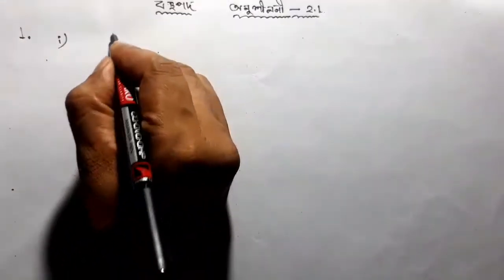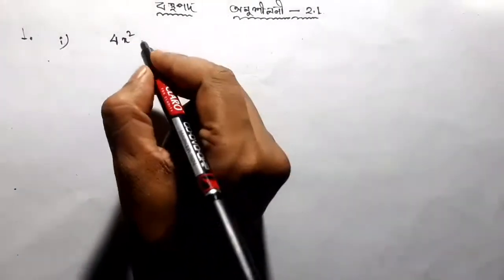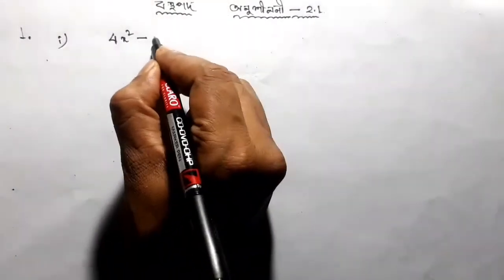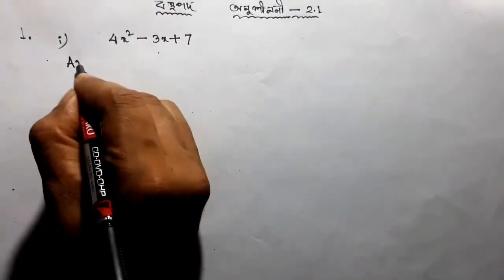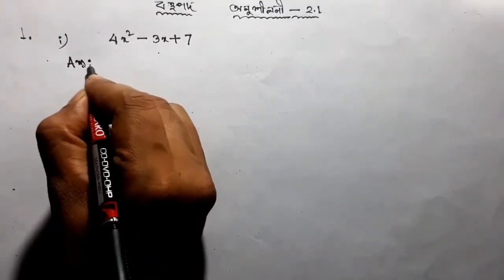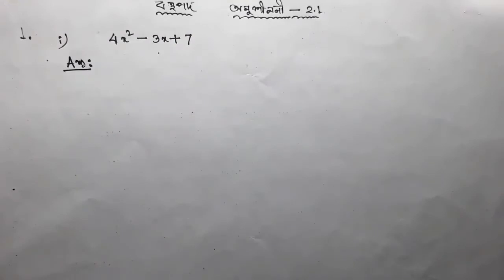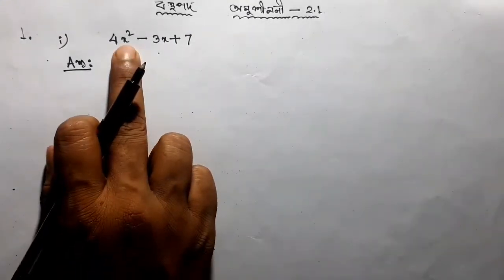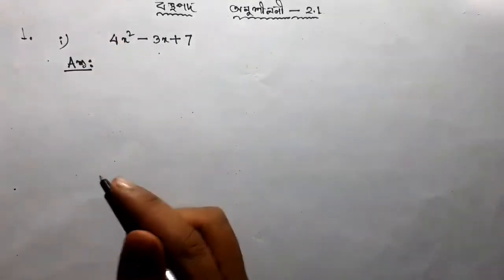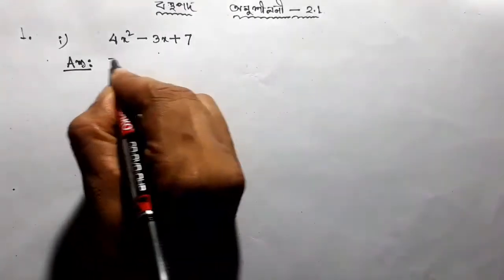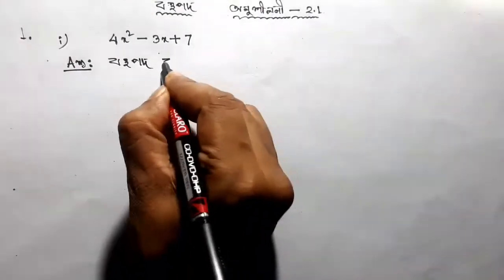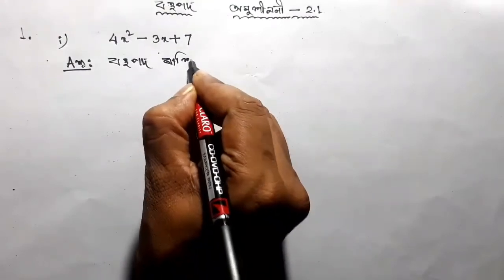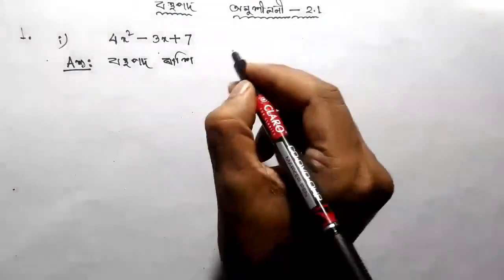Number 1: 4x squared minus 3x plus 7. If you have root 2, you will have root 2.